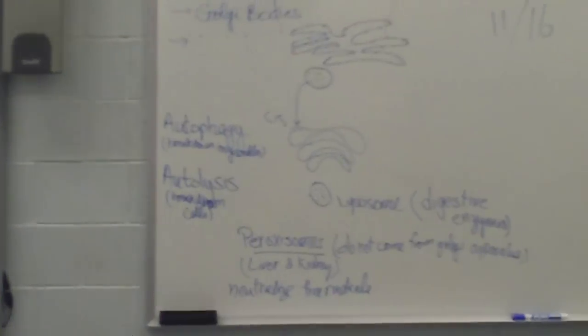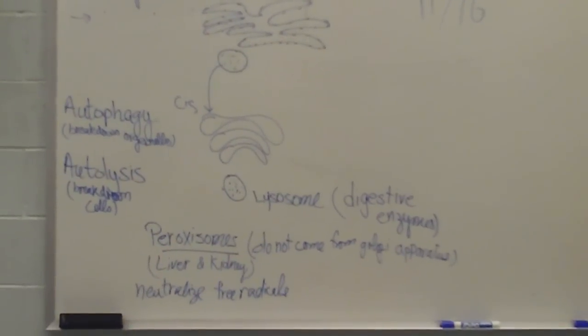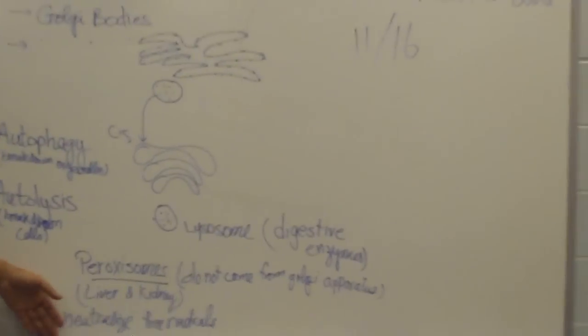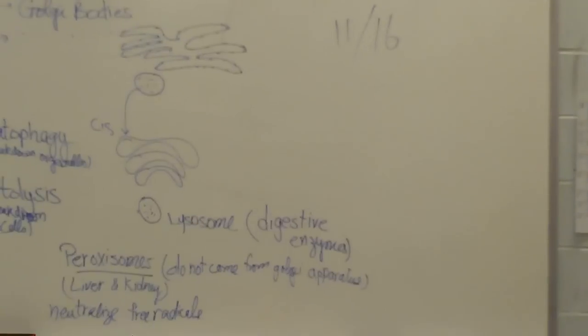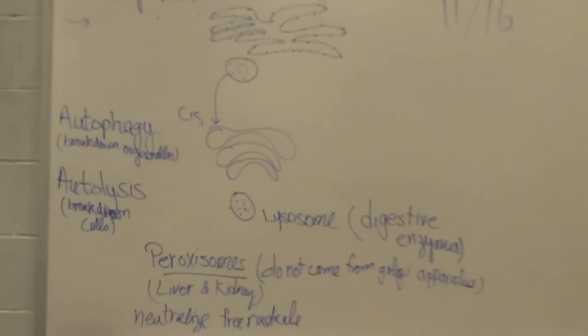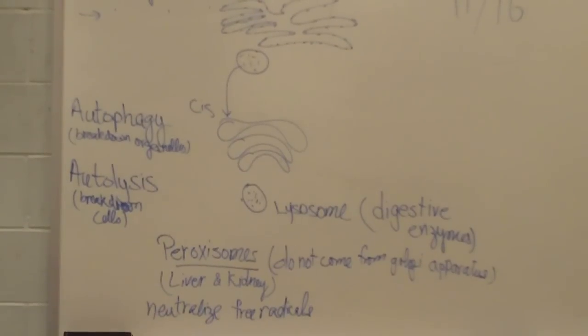Wait, what are peroxisomes? Peroxisomes are the vesicles, membrane-bound vesicles which break down or neutralize free radicals. Yes. And peroxisomes, do they come from the Golgi? No, they do not come from that. They come from RER, the rough ER. Your book doesn't say. Oh, so peroxisome enzymes are not produced by the Golgi apparatus. Yeah, okay.